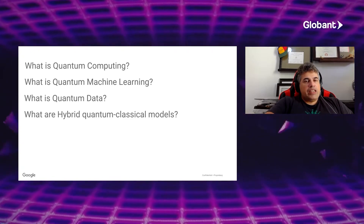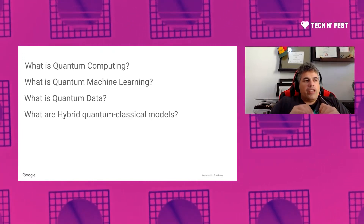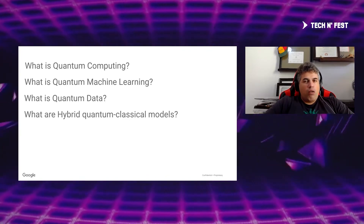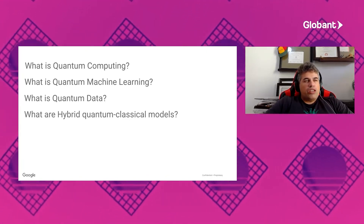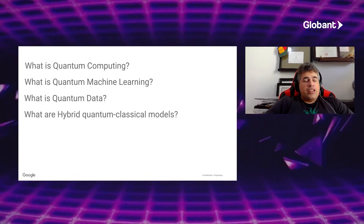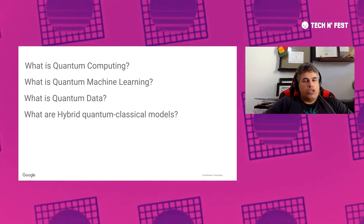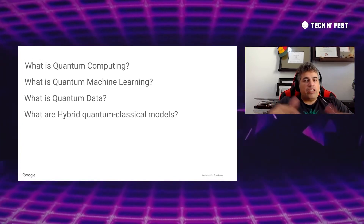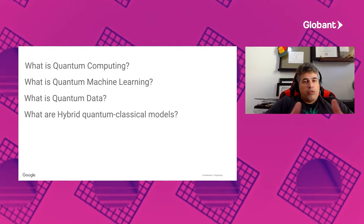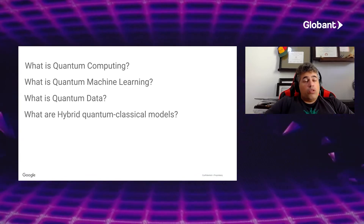A quantum model can represent and generalize data with a quantum mechanical origin. Because near-term quantum processors are still fairly small and noisy, quantum models cannot generalize quantum data using quantum processors alone. That's why TensorFlow, which already supports heterogeneous computing across CPUs, GPUs, and TPUs — the TensorFlow process units that only Google provides — is used as the base platform to experiment with hybrid computing class algorithms.